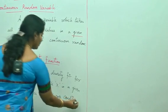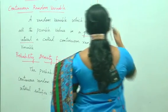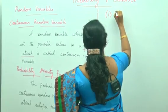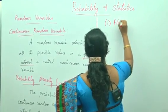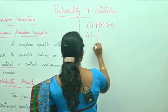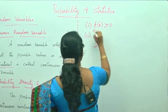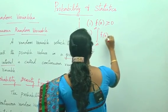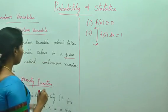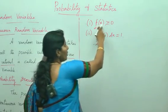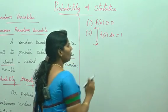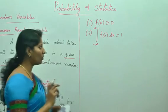Condition number 1: f(x) should be greater than or equal to 0. Condition number 2: the integral from minus infinity to infinity of f(x) dx is equal to 1. So the conditions are f(x) ≥ 0 and the integral from minus infinity to infinity of f(x) dx equals 1.